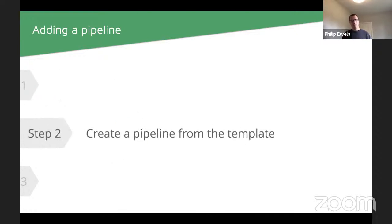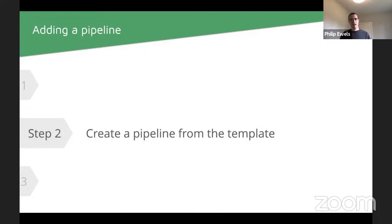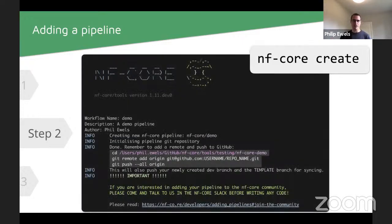Once you're ready, we have a template that kicks you off with a blank Nextflow pipeline but with lots of boilerplate code already built in. This started as a useful thing but is now pretty much a requirement if you want a pipeline in nf-core, because we add lots of functionality to the template and there's an automatic synchronization mechanism that keeps your pipeline up to date. You launch it by running 'nf-core create', which prompts for a name, description, and author, then generates the template.